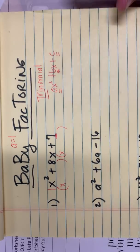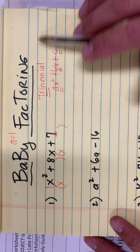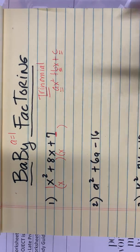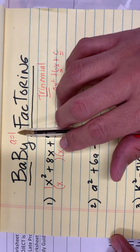Hey there, Ms. Olivares here, and today we're going to learn how to factor trinomials. We're going to start with the easy one, which is called baby factoring, wherein A is equal to 1.